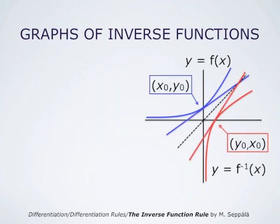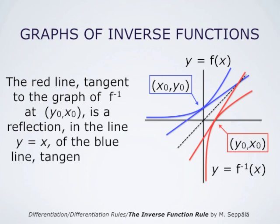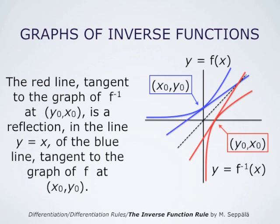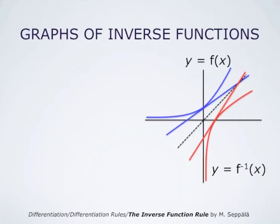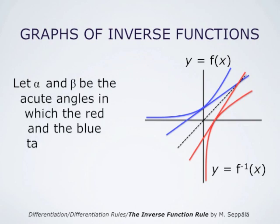Consider the line tangent to the graph of the function f at the point (x₀, y₀). This is the blue line shown in the picture. The red line tangent to the graph of the inverse function at (y₀, x₀) is a reflection in the line y equals x of the blue tangent line at (x₀, y₀). When we form the inverse function of a function, we simply exchange the roles of x and y. Let alpha and beta be the acute angles in which the red and blue tangent lines intersect the x-axis.